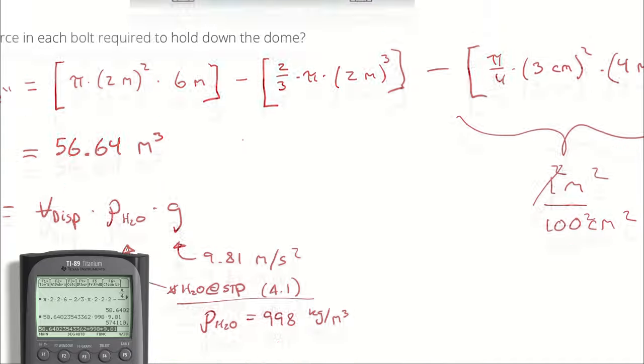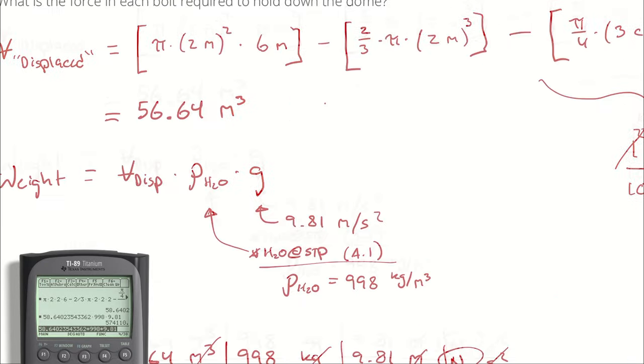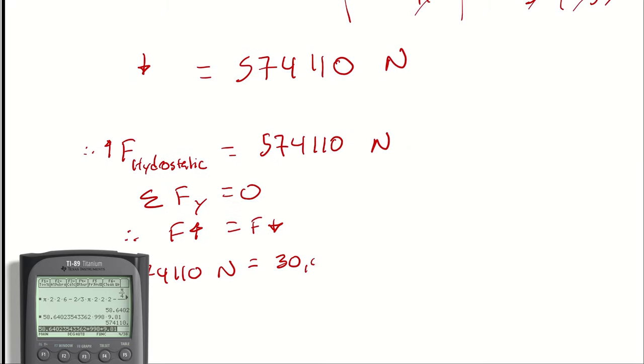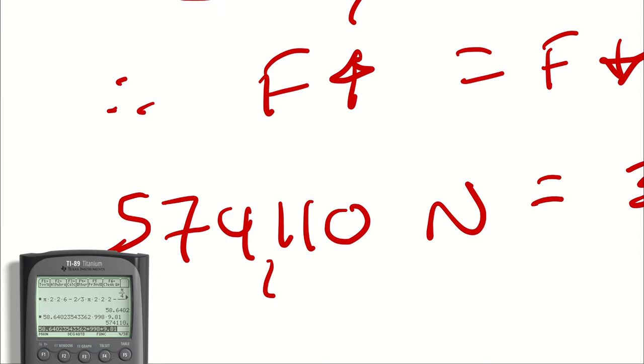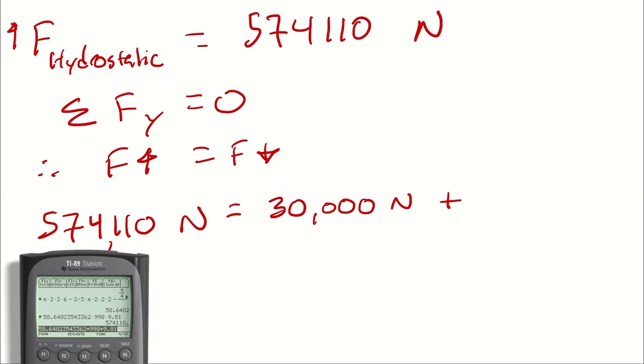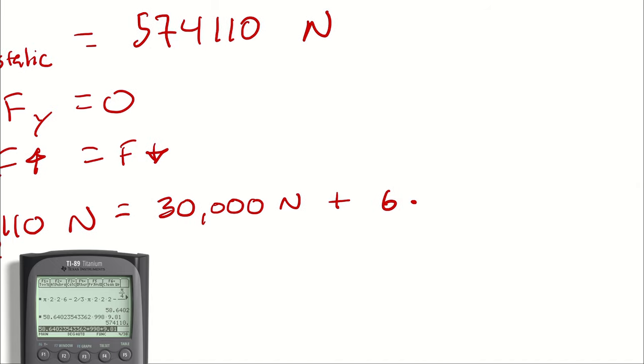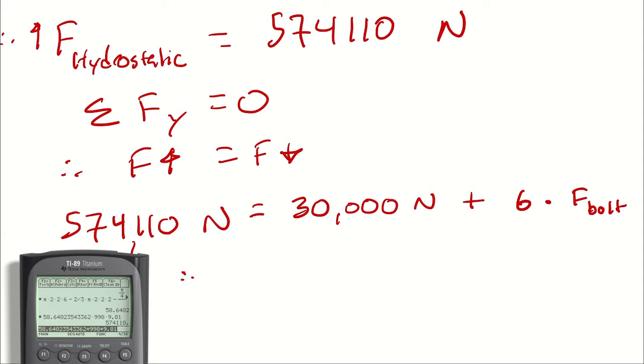The force up is 574,110 newtons. There are two forces down: the weight of the apparatus itself, which is 30 kilonewtons, and the bolts holding the apparatus down. There are six bolts, and I'm assuming that the hydrostatic force is perfectly balanced and each bolt is supporting the same weight. Therefore, this is six times the force of the bolt.